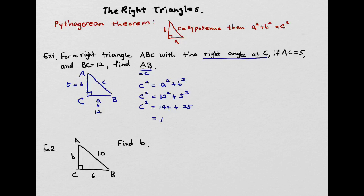We know that A squared is 12 squared and B squared is 5 squared. Adding those two numbers gives us 169, so 169 equals C squared. In order to find C, we take the square root of both sides. Don't forget the plus or minus sign — the square root cancels the square, leaving C equals plus or minus square root of 169, which is 13. But because C is a length and distance cannot be negative, C equals 13.